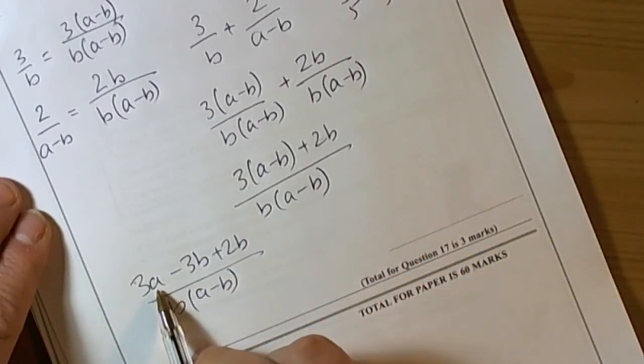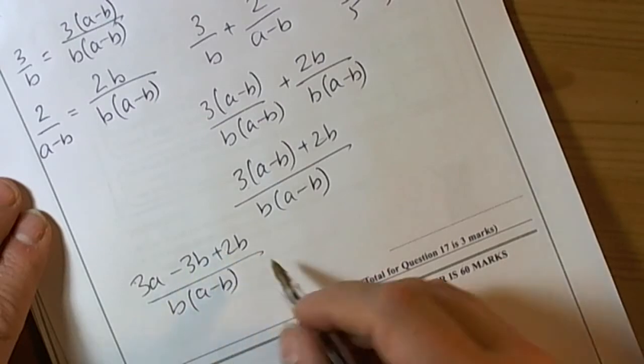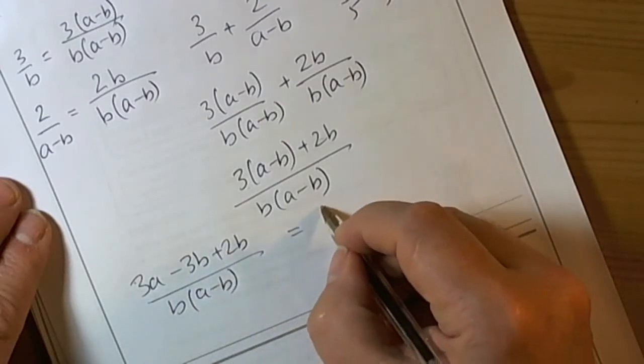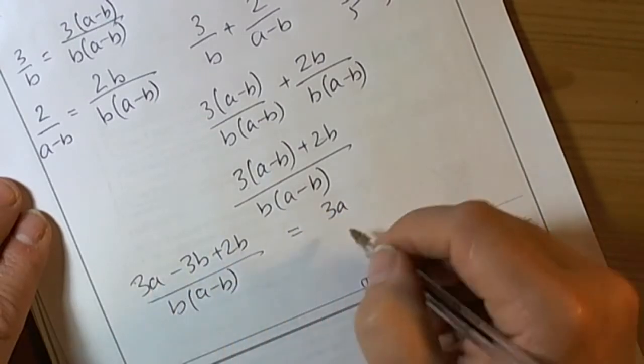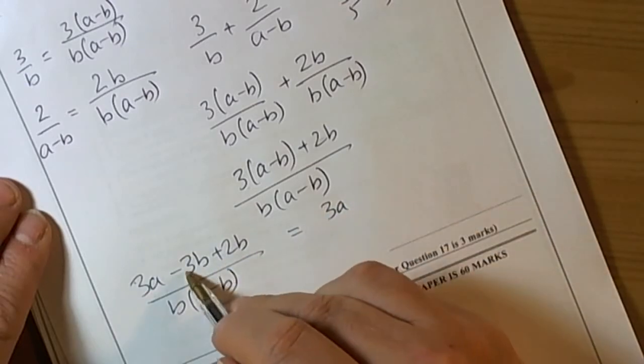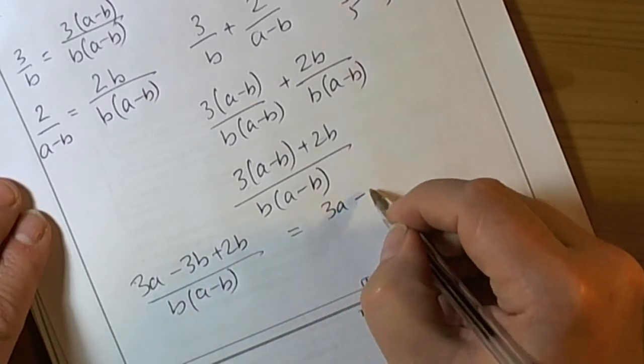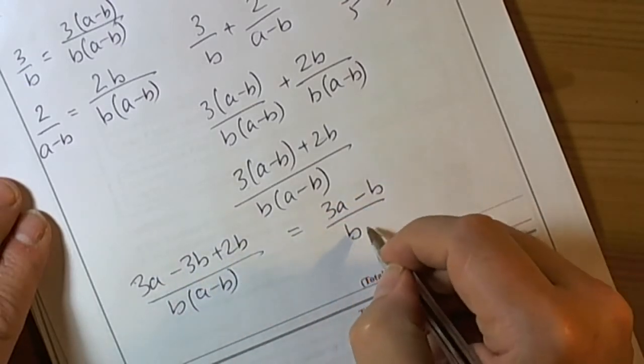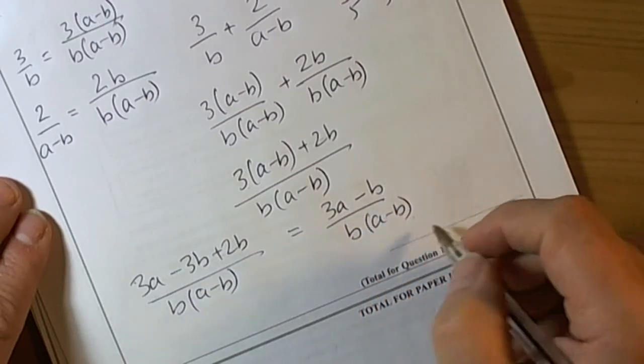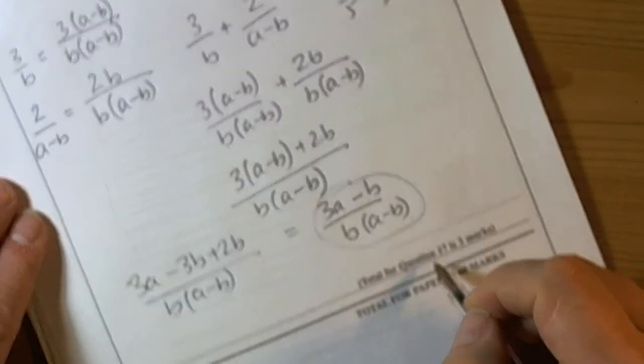We've got negative 3b plus 2b. That leaves us with 3a not being touched because it's got no like terms to join together. Negative 3b plus 2b leaves us with negative b, so (3a - b) over b(a-b). That's going to be our final answer.